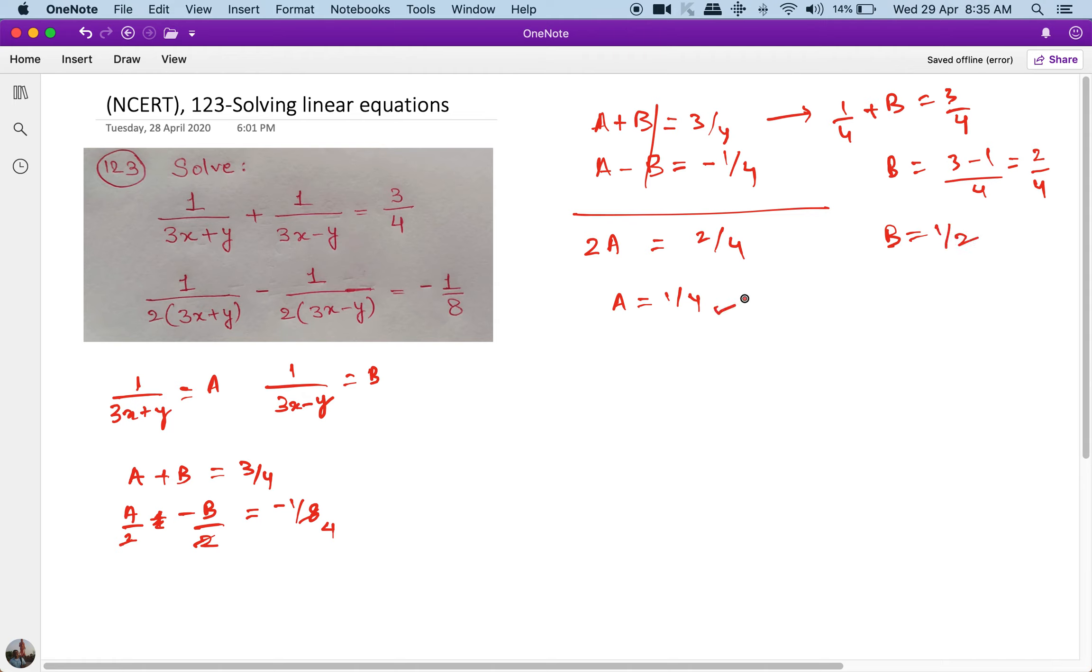Now I have the value of A and I have the value of B, but I will still get the value of A and B in terms of x and y. So I know that 1 upon 3x plus y is equal to 1 upon 4, because this is what I substituted. This implies 3x plus y is equal to 4, simply by cross multiplication.